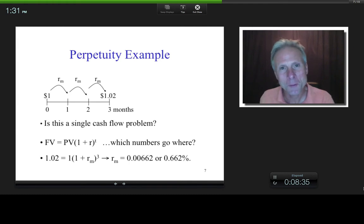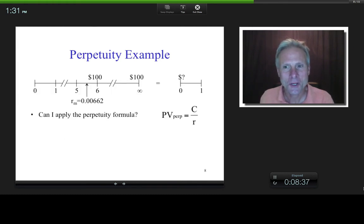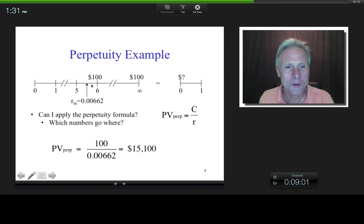So there's the algebra in case that's useful to you. So now we have the effective monthly rate. And so can I now apply my perpetuity formula? I can, right? So what would I put in for my C? That'd be 100, right? And what do I put in for my R? These are monthly periods, so I'd better be working with an effective monthly rate. So basically what I would get would be about $15,100.